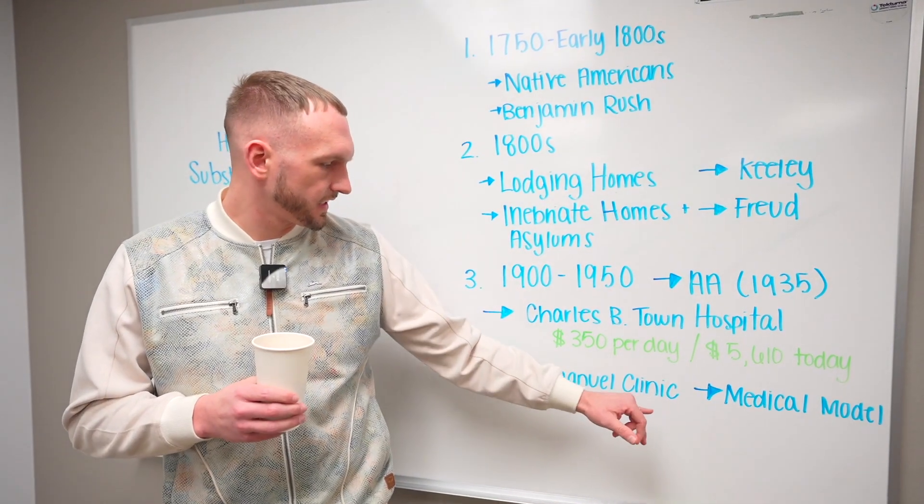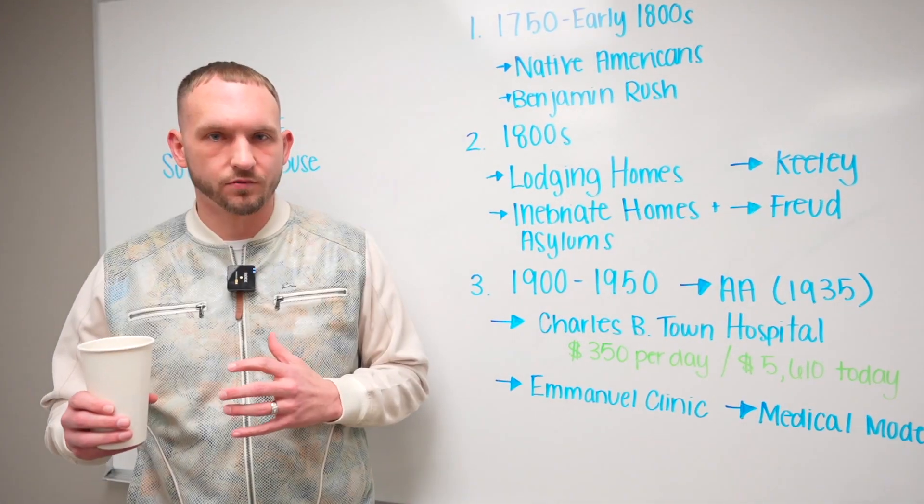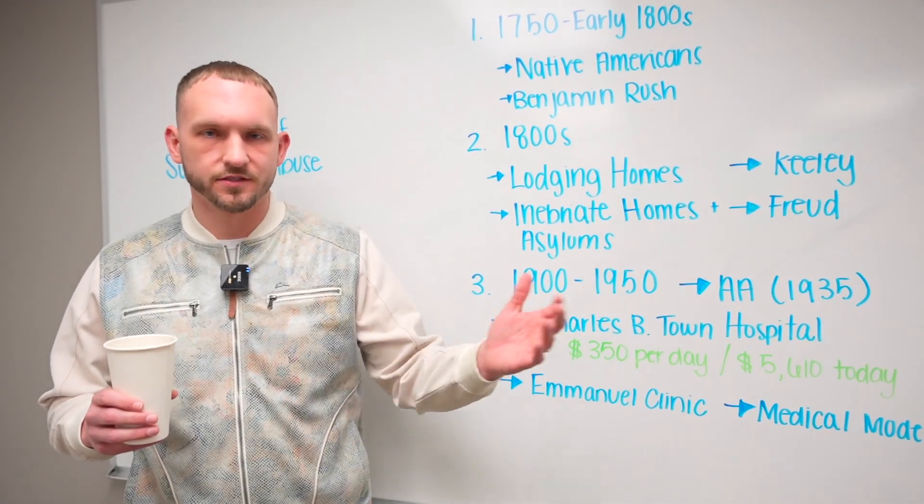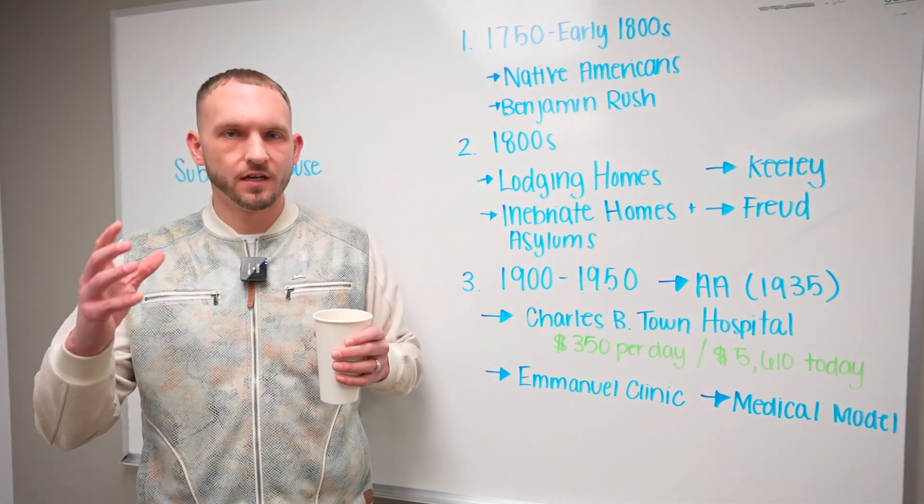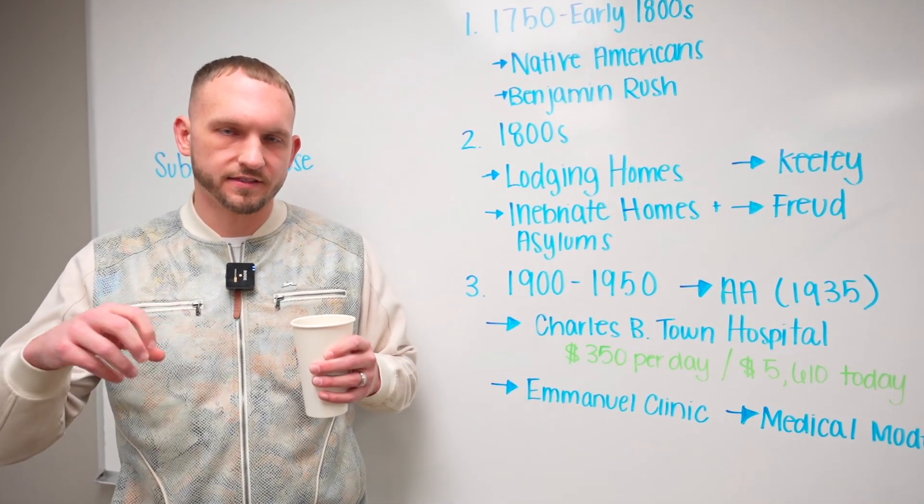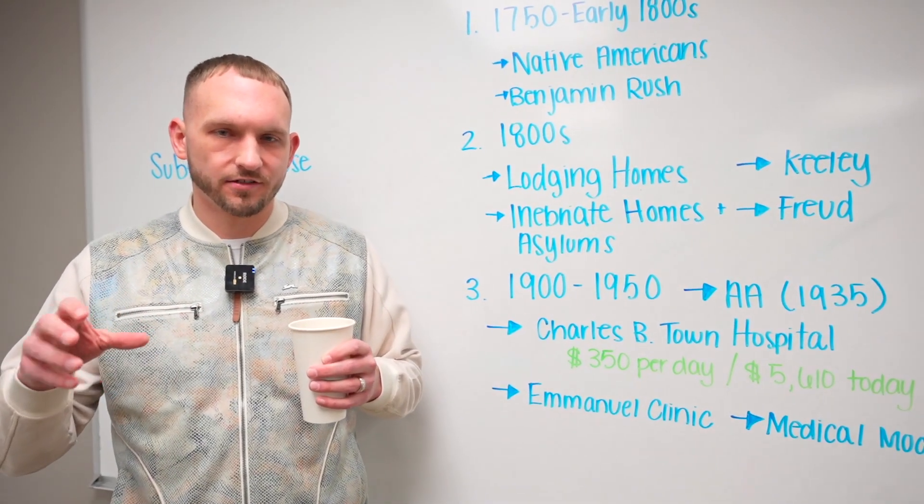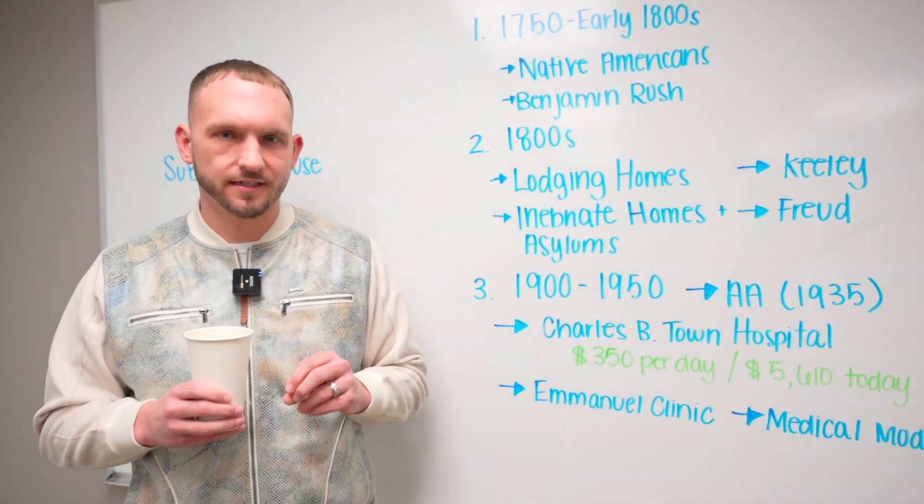The Emanuel Clinic, that was the first time that medical model took place. Today's world, we use the ASAM to measure substance abuse services. When somebody comes in, we have a diagnostic assessment. That's how we base all our practice off the DSM-5. DSM-5 has a board of psychiatrists and doctors and stuff that guide these principles. We're now in the fifth edition.